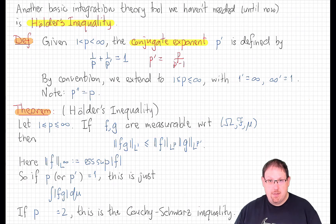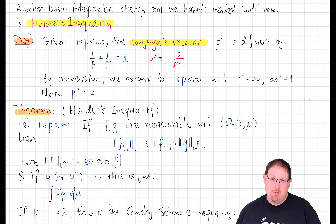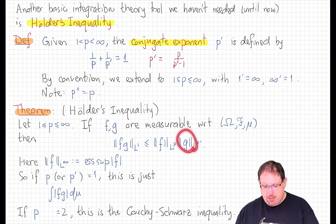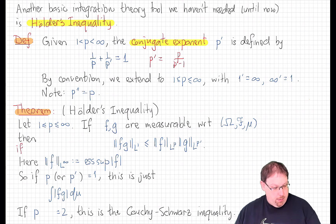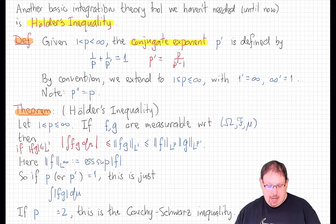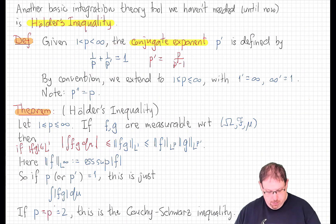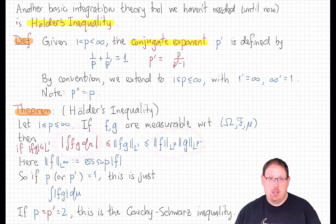Just to be clear: it doesn't matter if f and g are in L1 or Lp. They are measurable, which means the absolute value of each is a measurable non-negative function, so its integral makes perfect sense, although it could take an infinite value. Similarly, the right-hand side could be infinite, but it's at least well-defined. In the special case where fg is in L1, the absolute value of the integral of fg is less than or equal to the L1 norm of |fg| by the triangle inequality. And when p equals 2, p' is also 2, so this statement is exactly the Cauchy-Schwarz inequality.